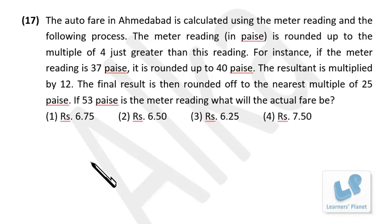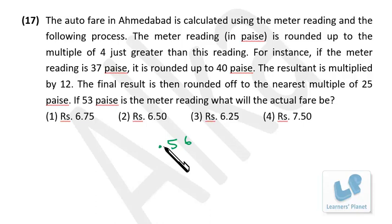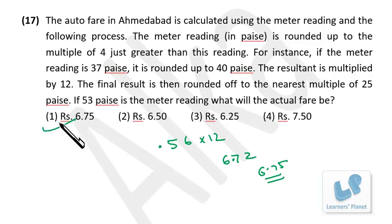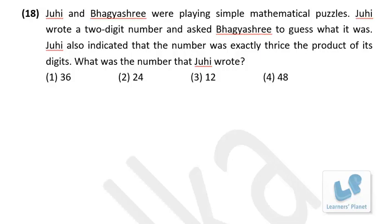The auto fare in Ahmedabad: the meter reading in paisa is rounded up to the nearest multiple of 4 just greater than the reading (e.g., 37 → 40). The result is multiplied by 12, then rounded to the nearest multiple of 25 paisa. For a meter reading of 53 paisa: round up to 56, multiply by 12 = 672 paisa = ₹6.72, then round to nearest 25 paisa = ₹6.75.